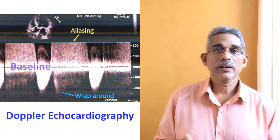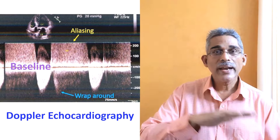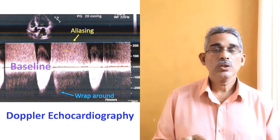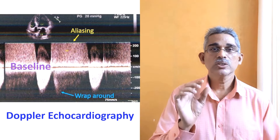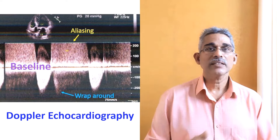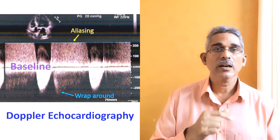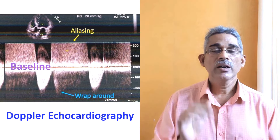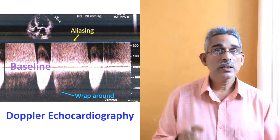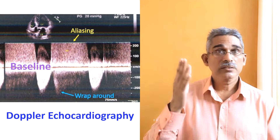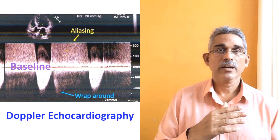Now we have color Doppler, in which the information is overlaid on a two-dimensional image so you can see in which direction blood is flowing through different structures. If there is a narrowed valve, there will be a high-velocity jet across that valve. In mitral stenosis, when blood flows from the left atrium into the left ventricle in diastole, it will be high-velocity turbulent flow. Similarly, in aortic stenosis when left ventricular blood is ejected into the aorta, or in aortic regurgitation, you also have turbulent flow.